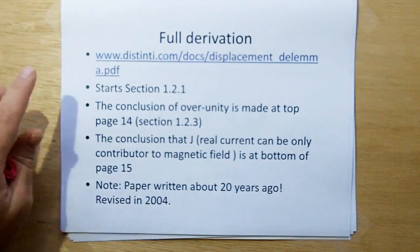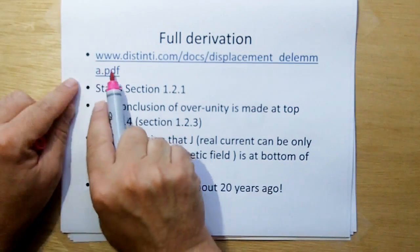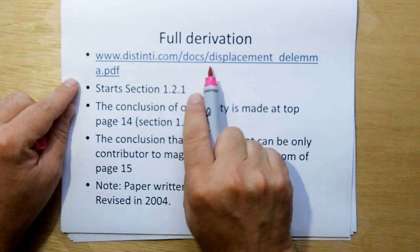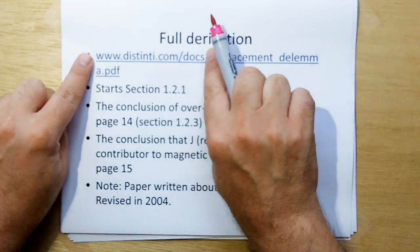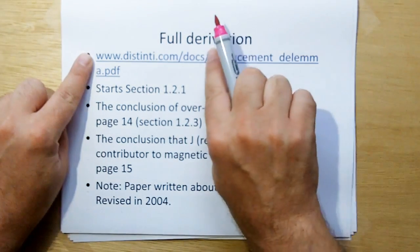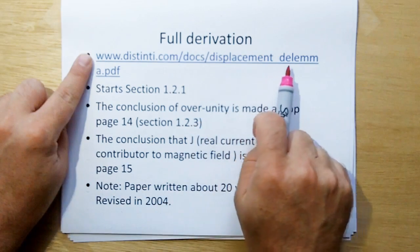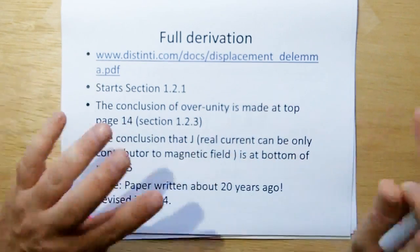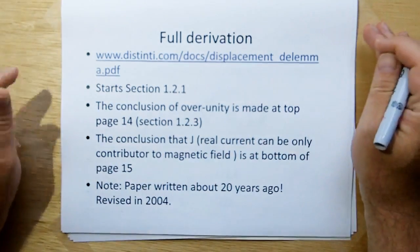Then what I forgot to do is I forgot to tell you that I have a complete derivation for this. And the derivation for this, if you go to www.dcinti.com docs, there's a document in there and you can browse this. So you don't have to type in the full URL. Just type this in and look for displacementdilemma.pdf.